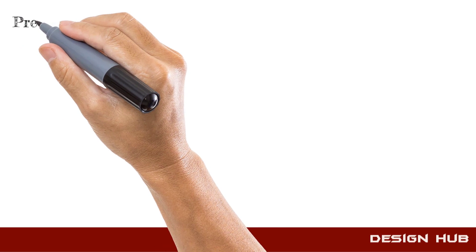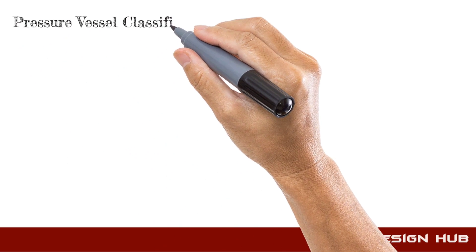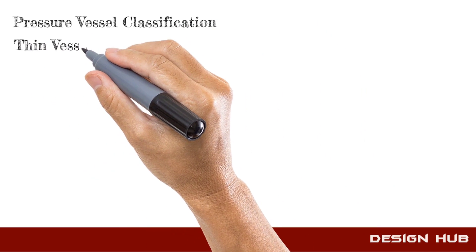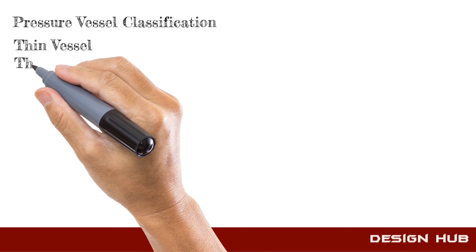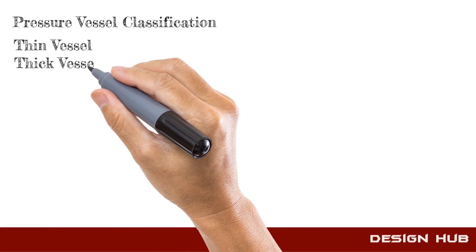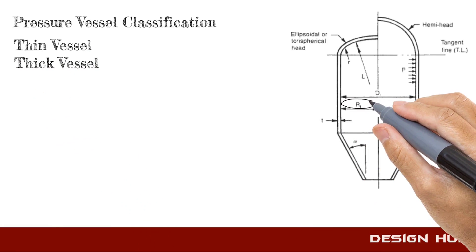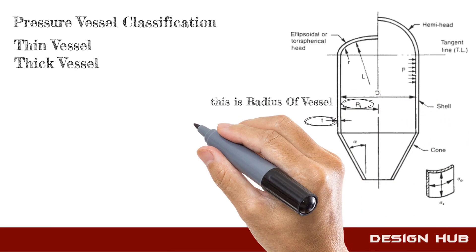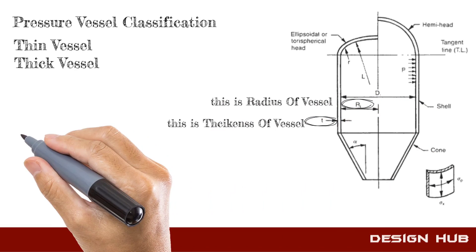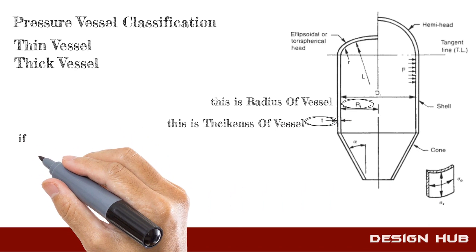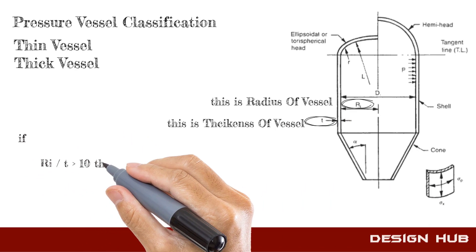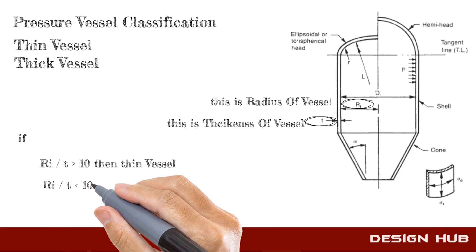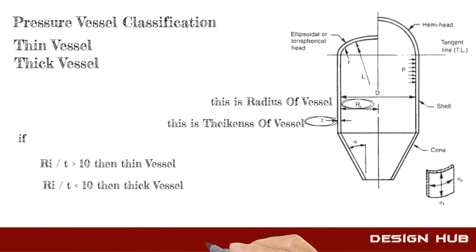First we cover pressure vessel classification: thin vessel and thick vessel. This is the radius of the vessel, and this is the thickness of the vessel. If the radius of the vessel divided by the thickness of the vessel results in greater than 10, then this is a thin vessel, otherwise it is a thick vessel.